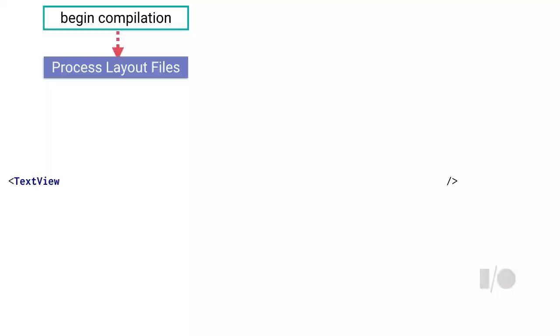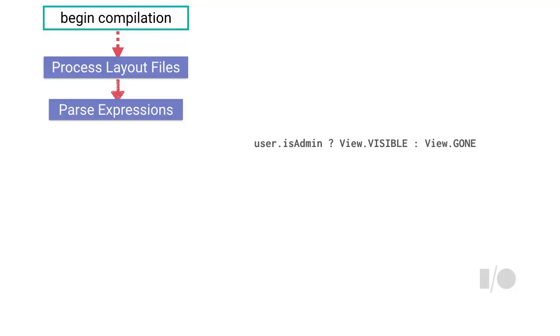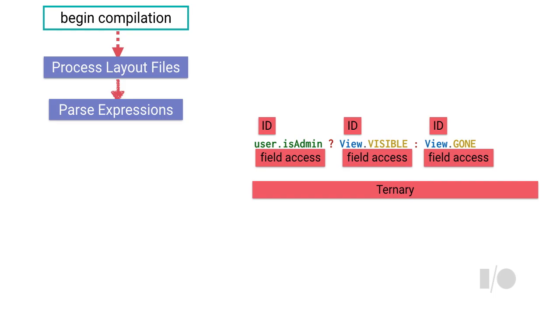The next step: we parse the expressions so they are grammatically correct. We don't know if what you put makes sense yet, but they need to be grammatically correct. We understand there are some identifiers here accessing a field. We have no idea what that is at this stage, but we know it's correct — and if it's not, we will throw an exception.